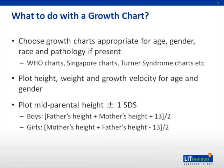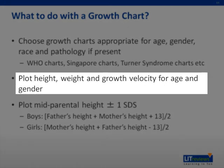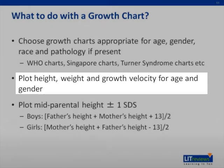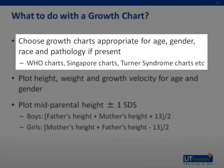Once you have obtained accurate anthropometric measurements, you need to enter the details on the relevant growth charts, which must include height for age, weight for age, height velocity for age, and head circumference for age in a younger child. There are gender-specific growth charts, growth charts specific for various conditions such as Turner syndrome, and charts which include local normative values.